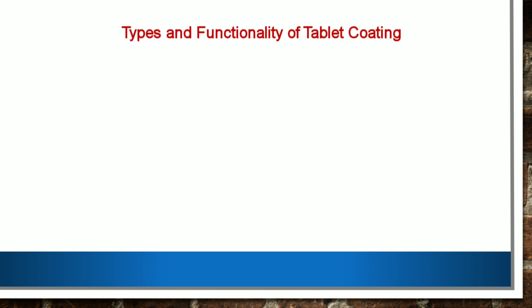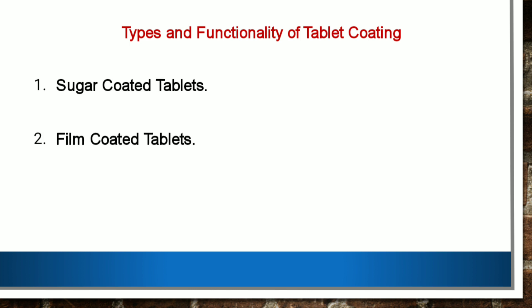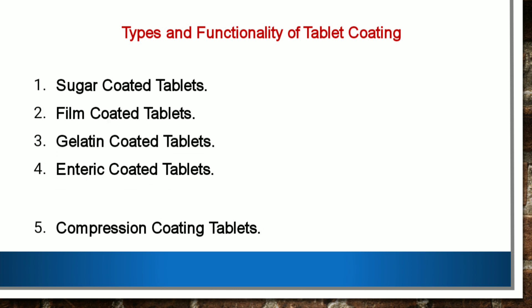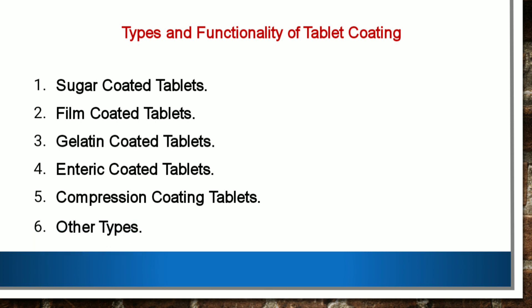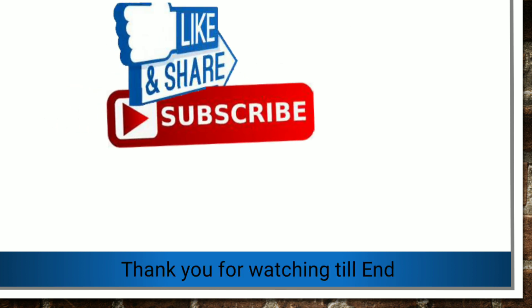The types and functionality of tablet coatings are: sugar coated tablets, film coated tablets, gelatin coated tablets, enteric coated tablets, compression coated tablets, and other types including electrostatic coating, dip coating, and rotary dry coating. We will be studying about these different coatings in coming videos. Thank you for watching this video.